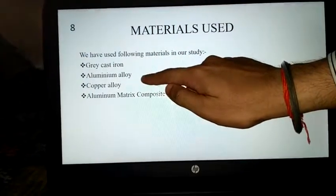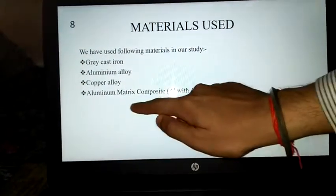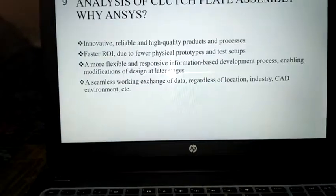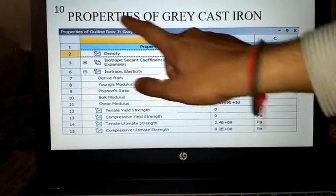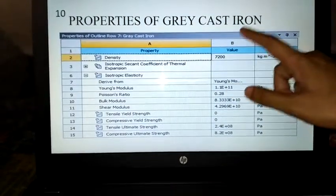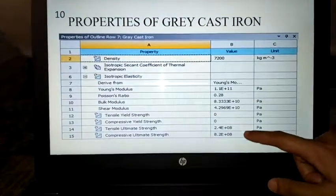The four materials are grey cast iron, aluminum alloy, copper alloy, and aluminum matrix composite. We first examined the properties of grey cast iron.